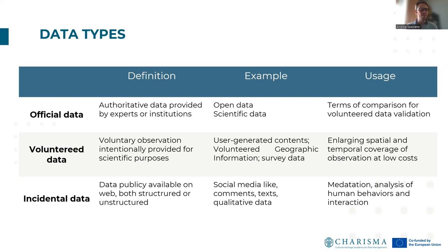Incidental data are publicly available on the web and can be structured or unstructured. For example, this kind of data includes social media interactions such as likes, comments, text, and qualitative data, but also images or video. Their usage is useful for metadata adaptation, analysis of human behaviors, and monitoring human interaction.